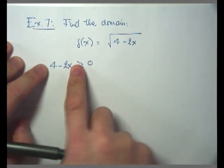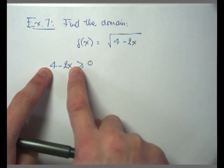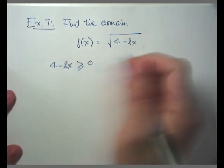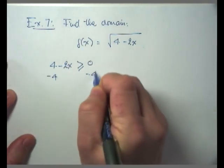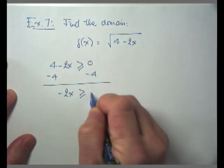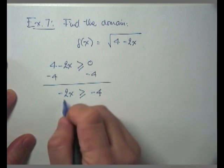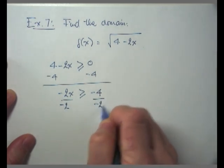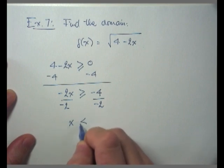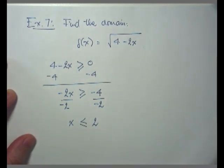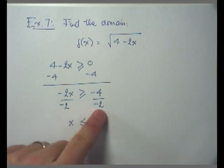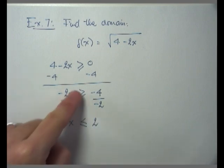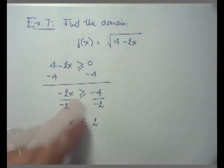To solve this inequality, I subtract 4 from both sides, giving me negative 2x greater than or equal to negative 4. Solving for x, I divide both sides by negative 2. This gives me x less than or equal to positive 2. Notice that dividing both sides of the inequality by a negative number is what caused the inequality to switch from greater than or equal to, to less than or equal to.